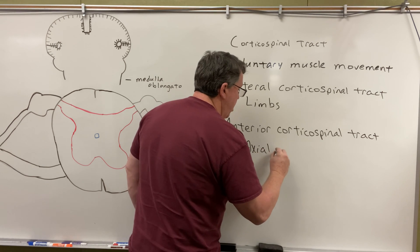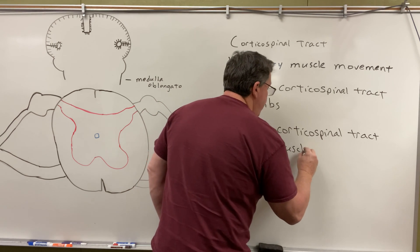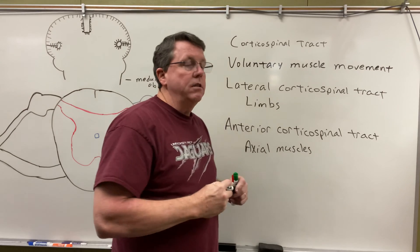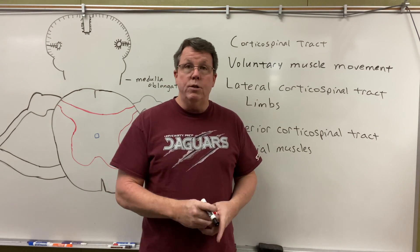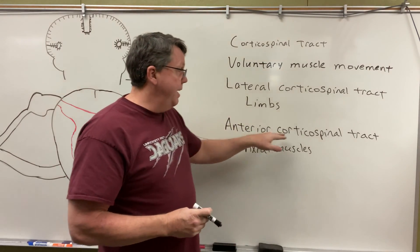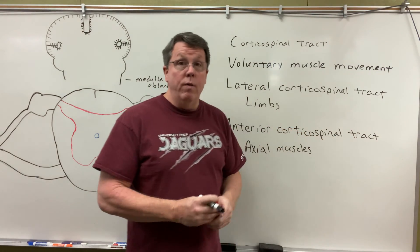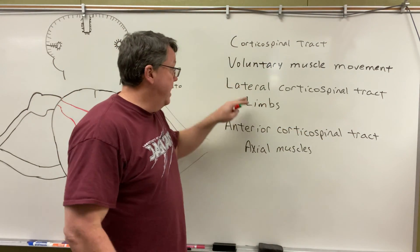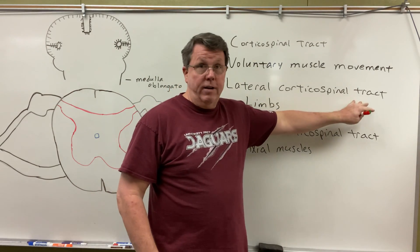The axial muscles are basically the muscles that are along the trunk of the body. So if I want to do a sit-up, that's going to be the anterior corticospinal tract. When I go to put my hands behind my head to do a sit-up, that's going to be the lateral corticospinal tract.